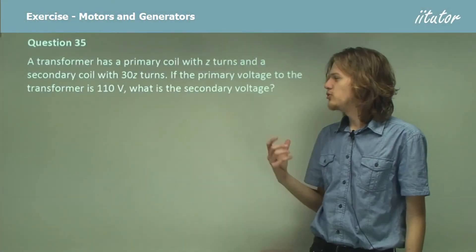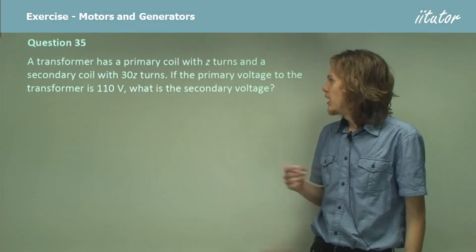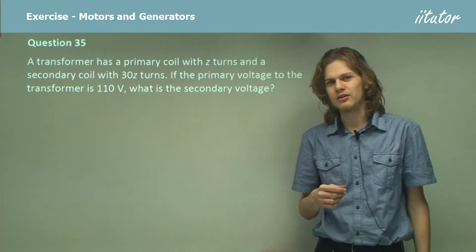A transformer has a primary coil with Z turns, oh dear algebra, and a secondary coil with 30Z turns.